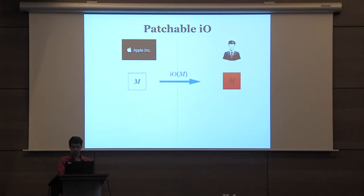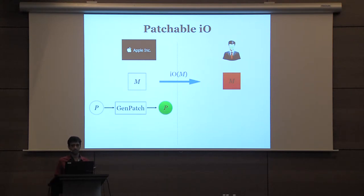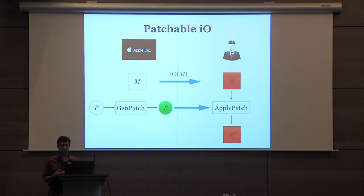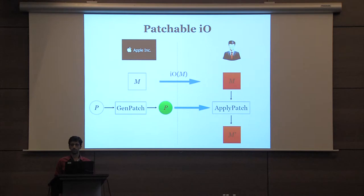Let me define this notion. As in standard IO for Turing machines, there is an obfuscation algorithm that lets you obfuscate Turing machines. In addition, you have a gen-patch algorithm that takes a patch P and outputs an encoding of P. You should think of this encoding of P as protecting the patch — it's some form of encryption of P.